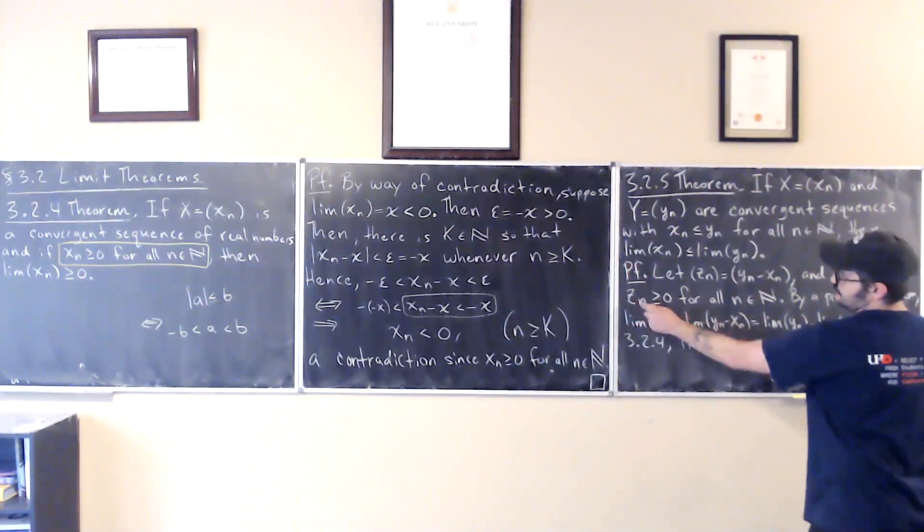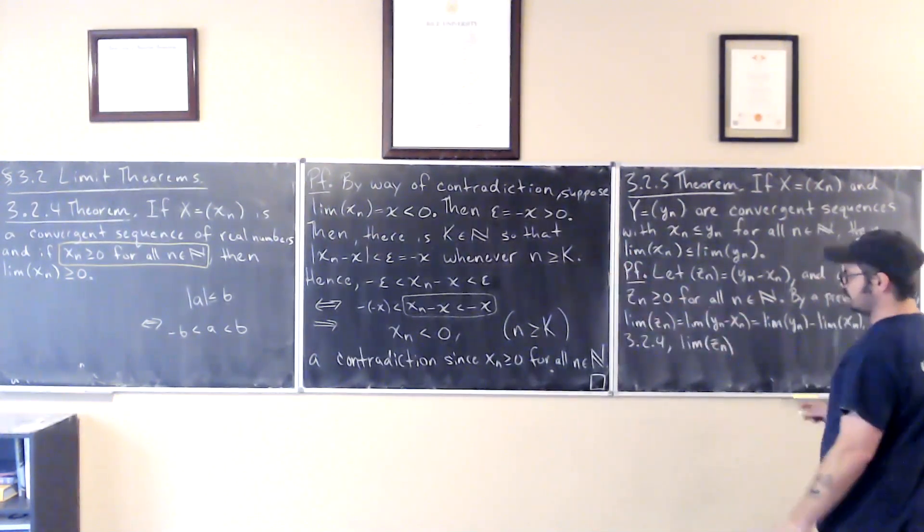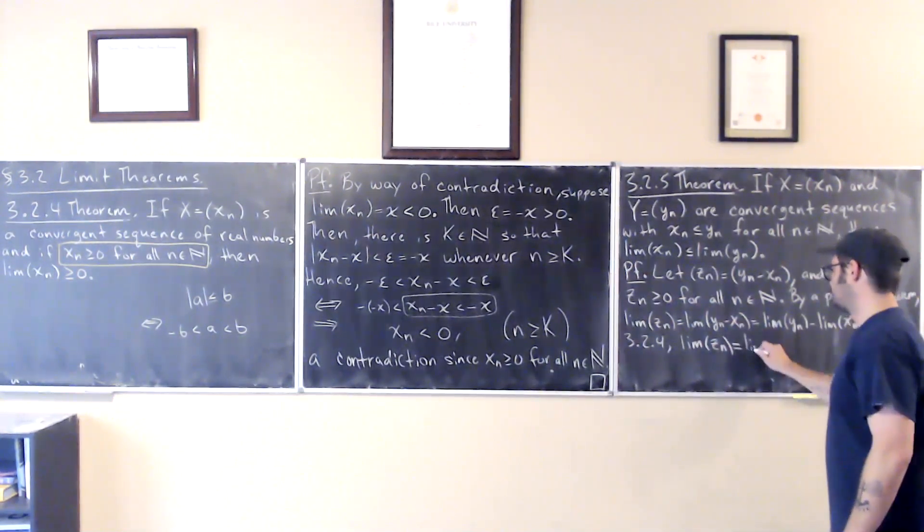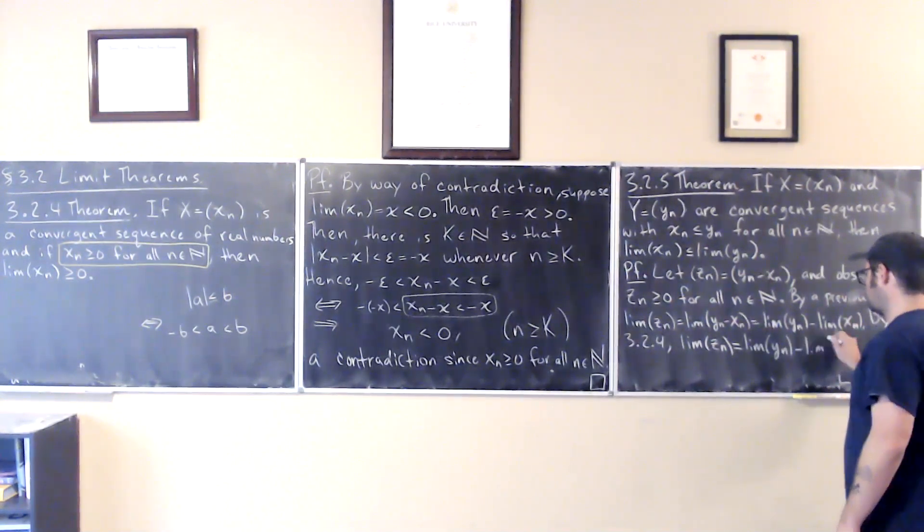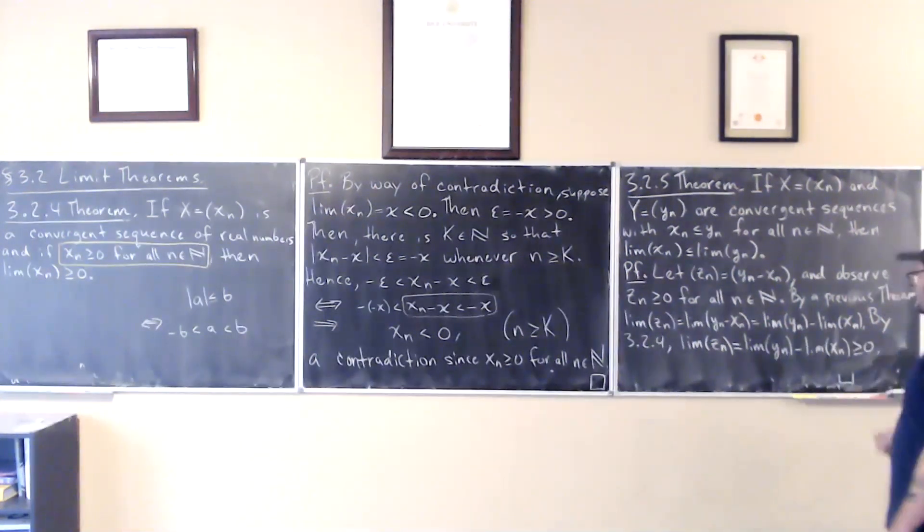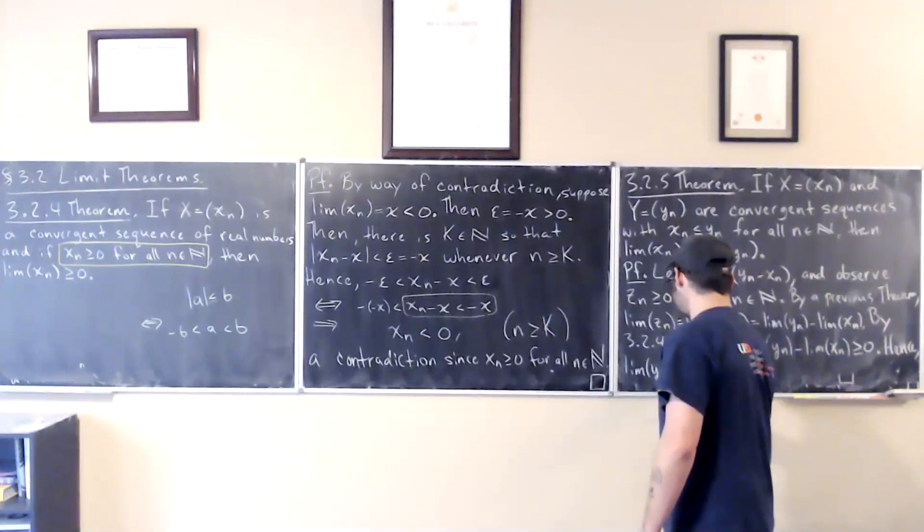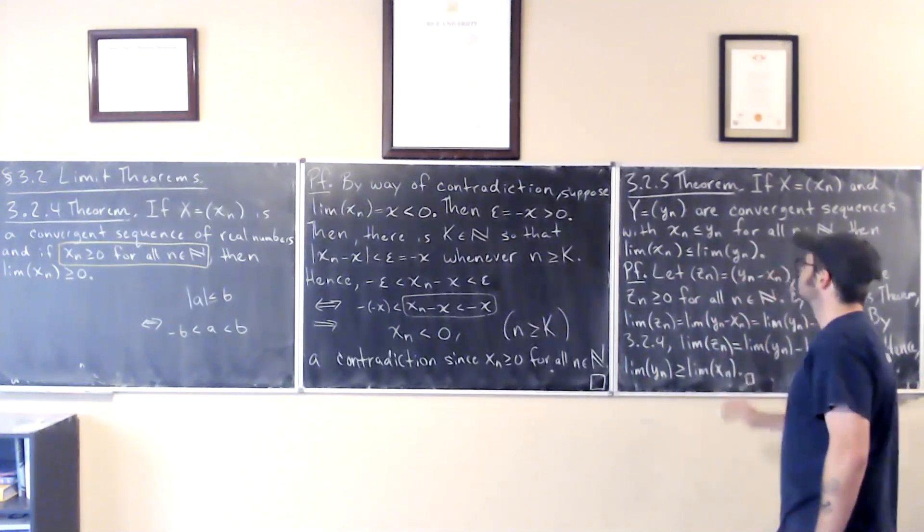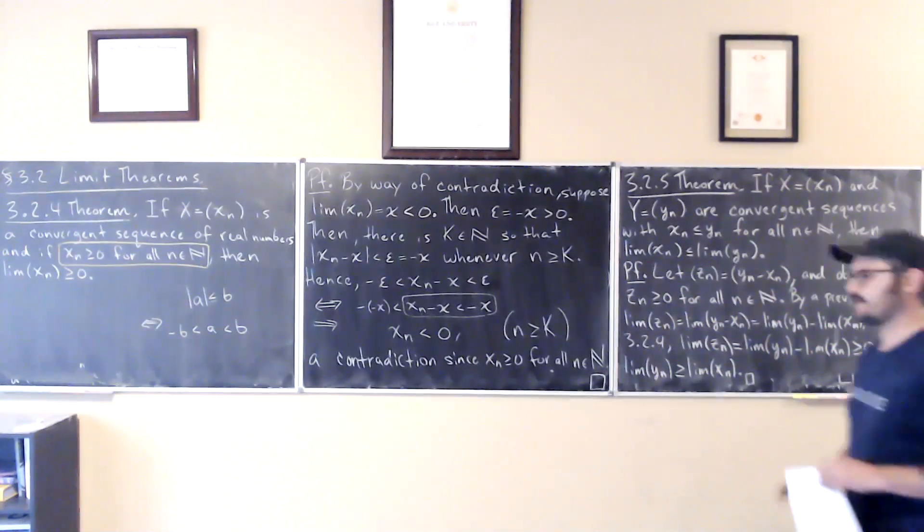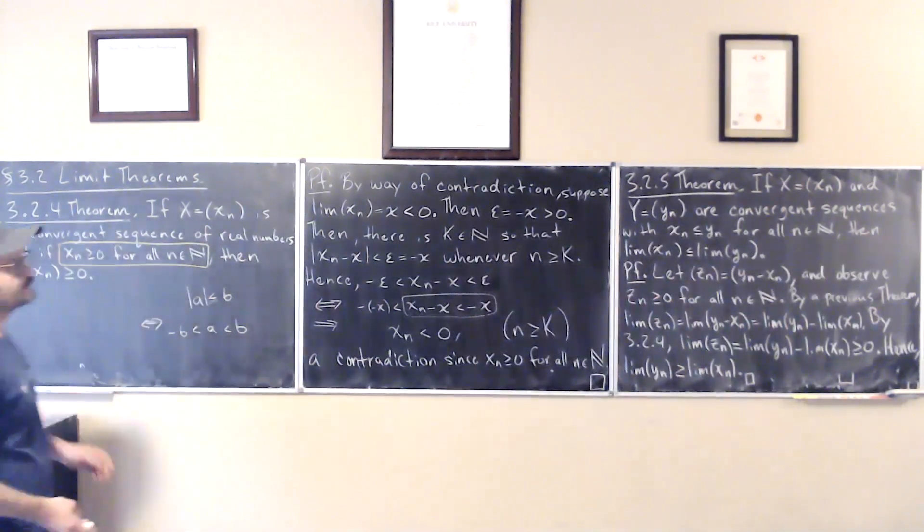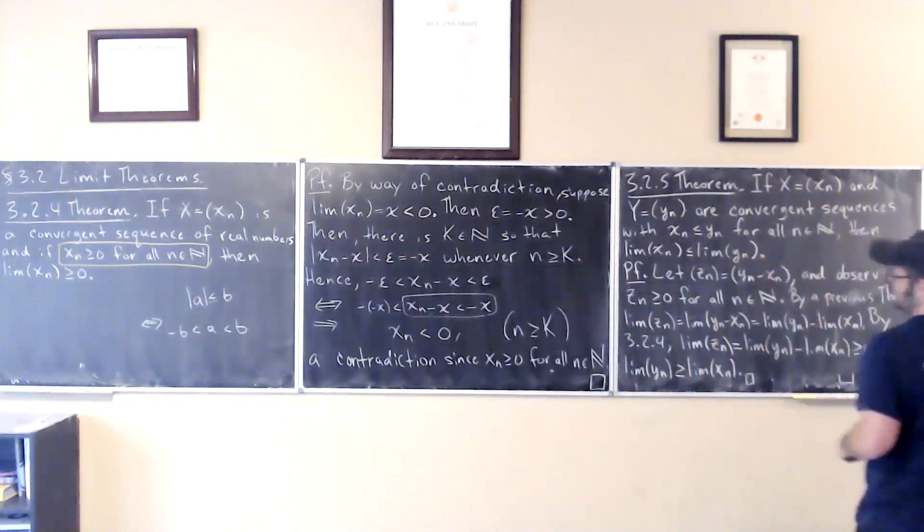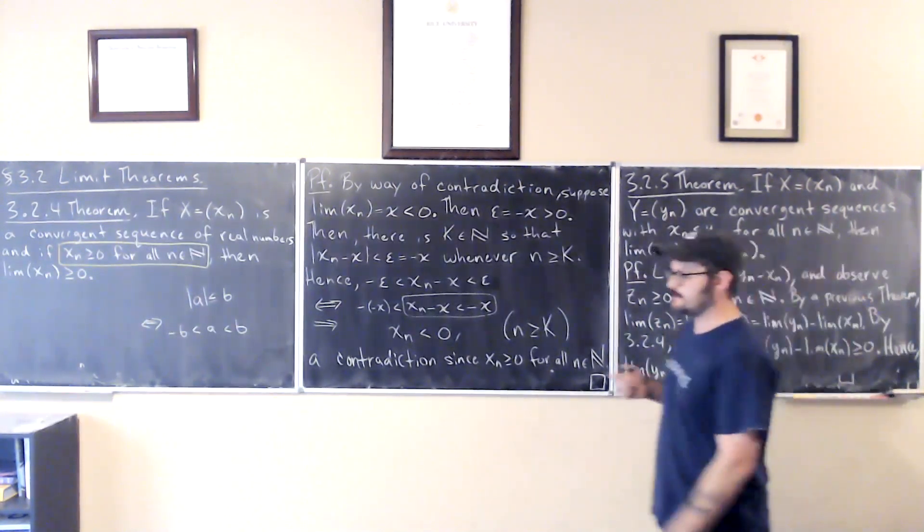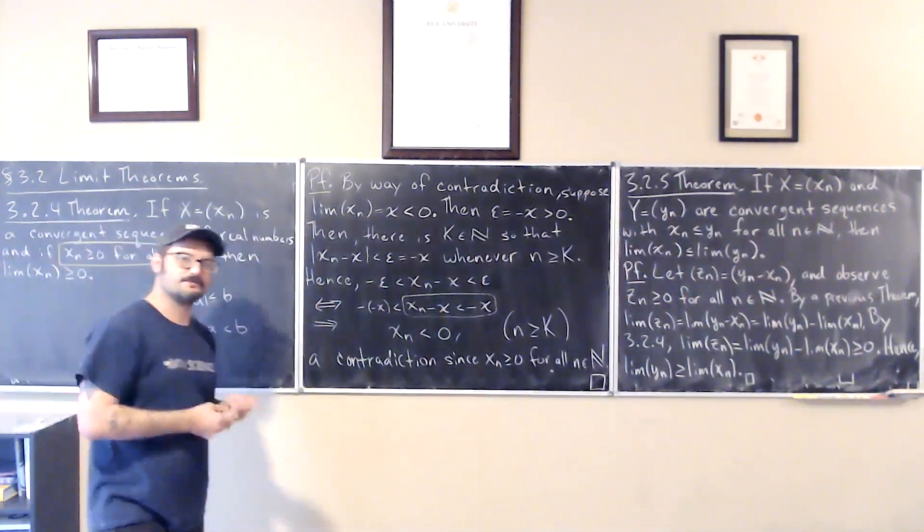Each of the terms of the sequence is greater than or equal to zero, so the limit is greater than or equal to zero. But this is also equal to this. If that minus that's greater than or equal to zero, then that's greater than or equal to that.